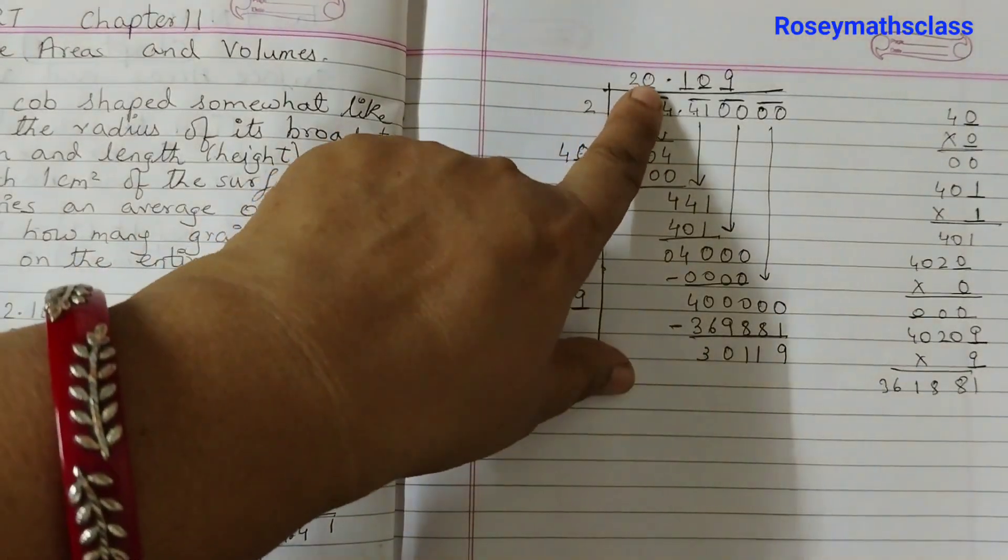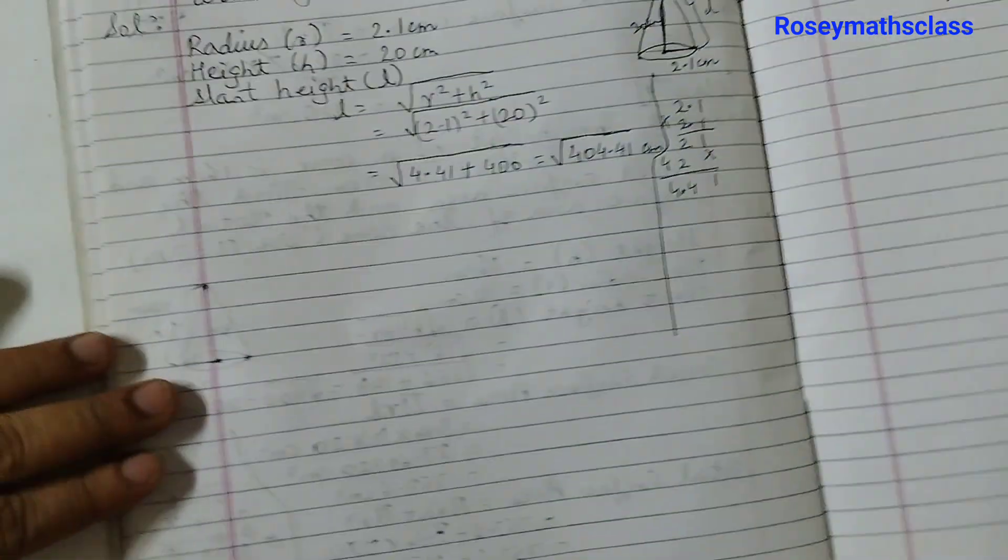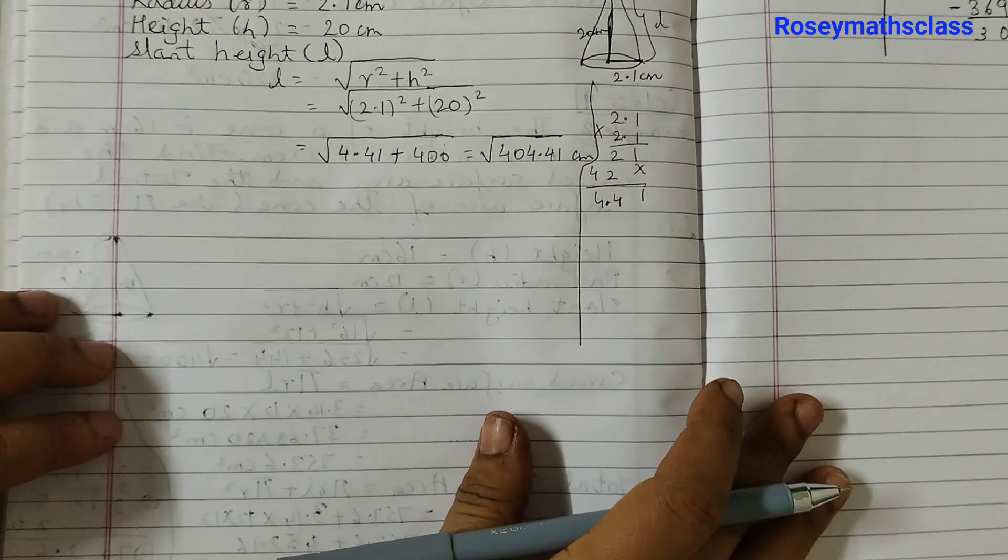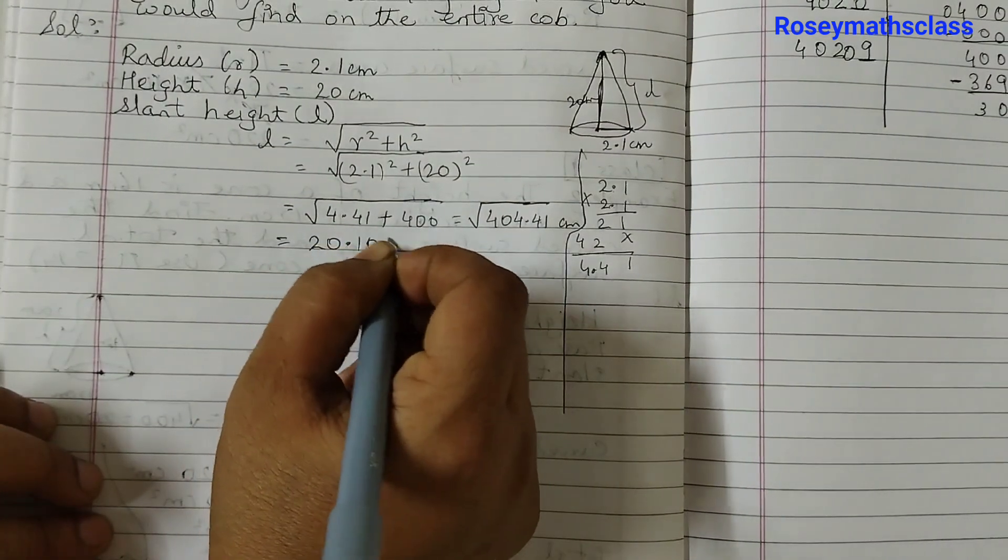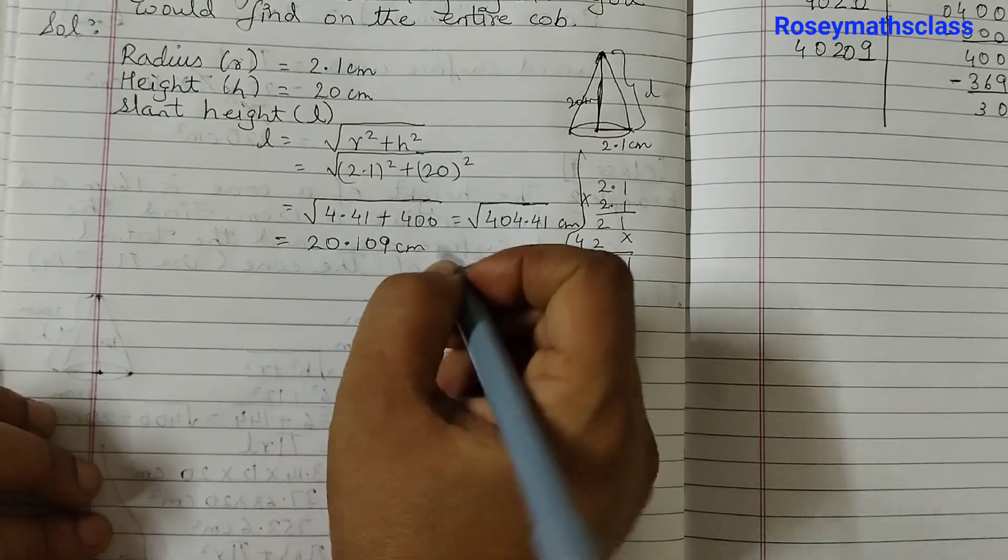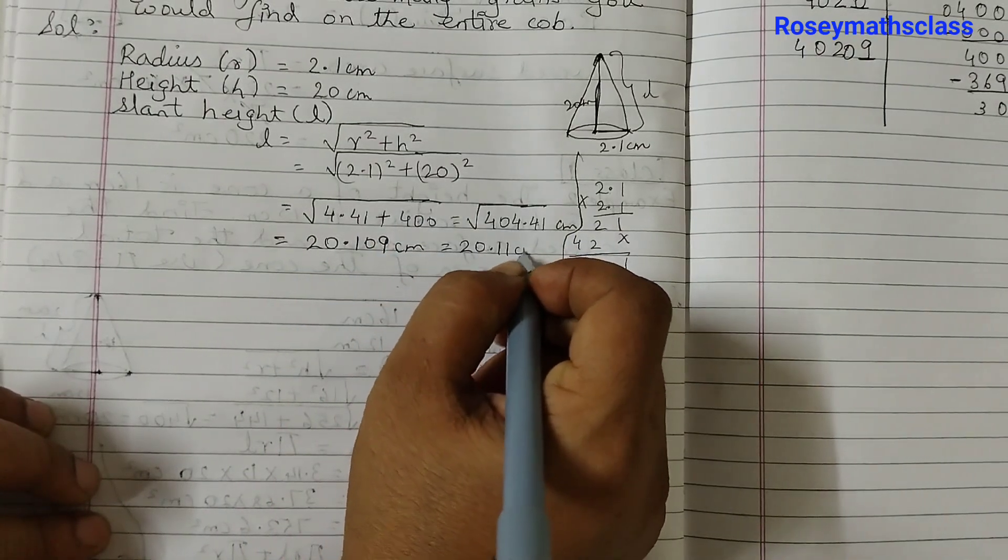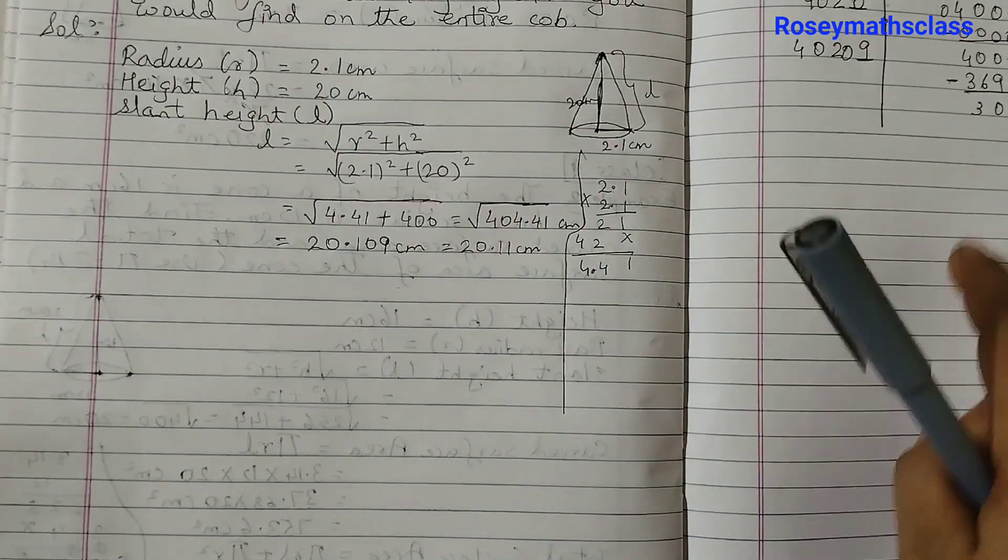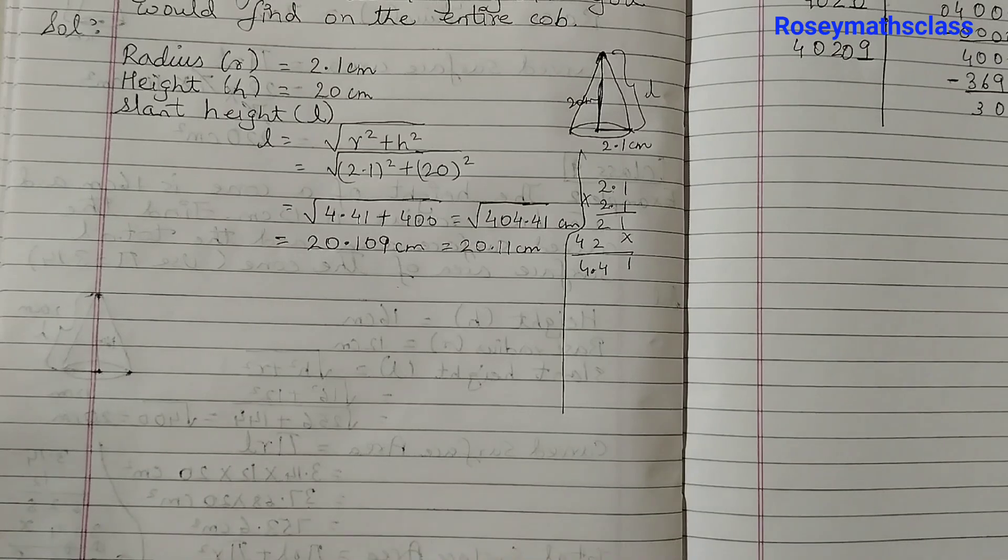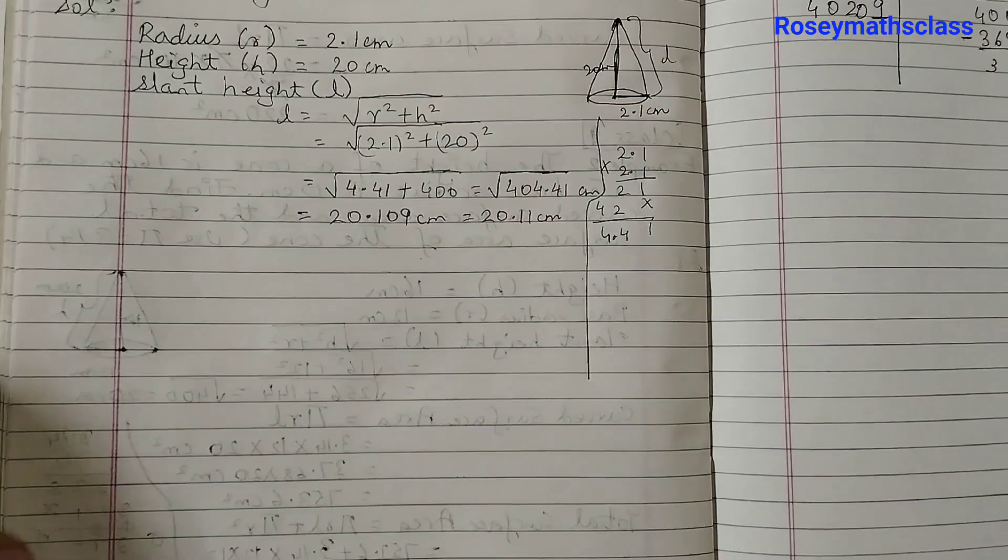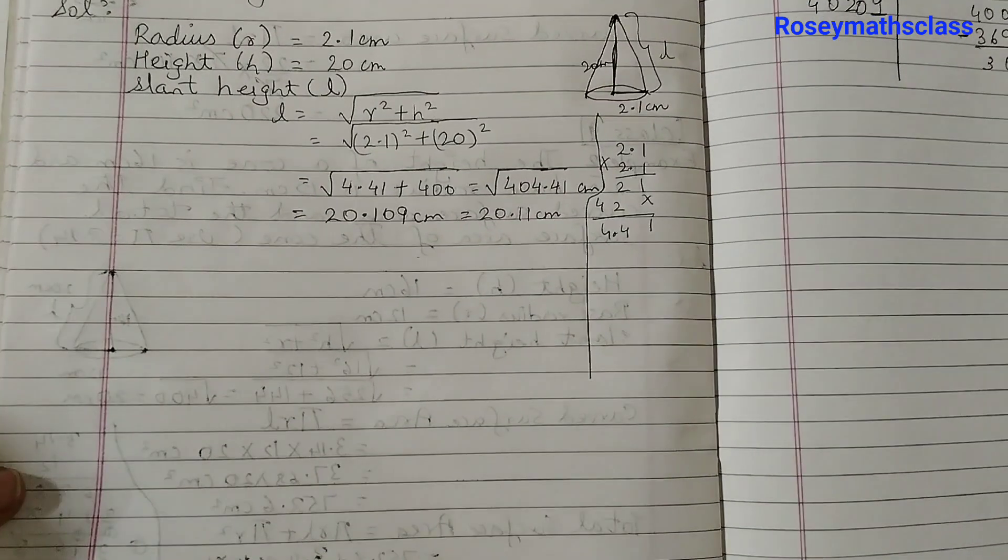So now we come back to our problem here. So here we got 20.109. So we will write here equals to 20.109 centimeters or approximately 20.11 centimeters. If you have not understood how to find the square root you can refer to class 8 textbook, NCERT textbook.